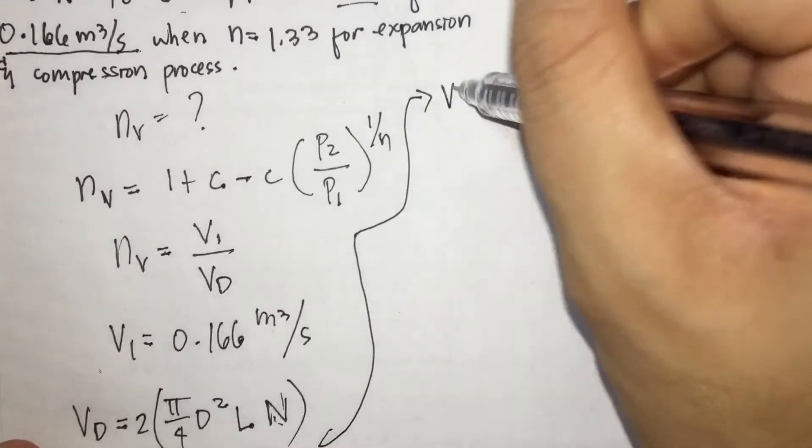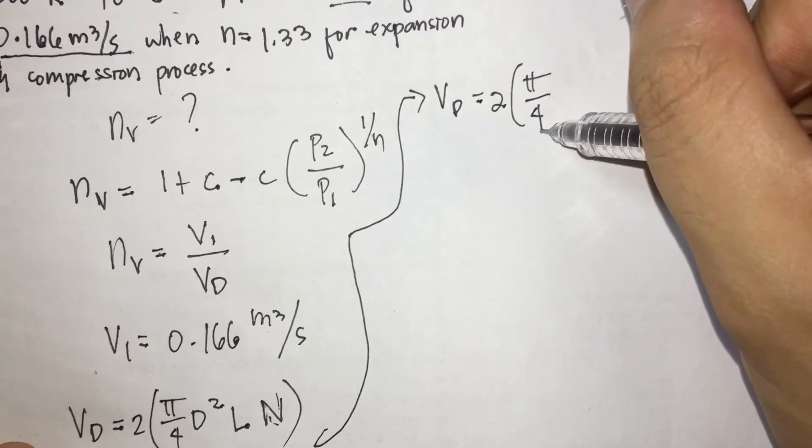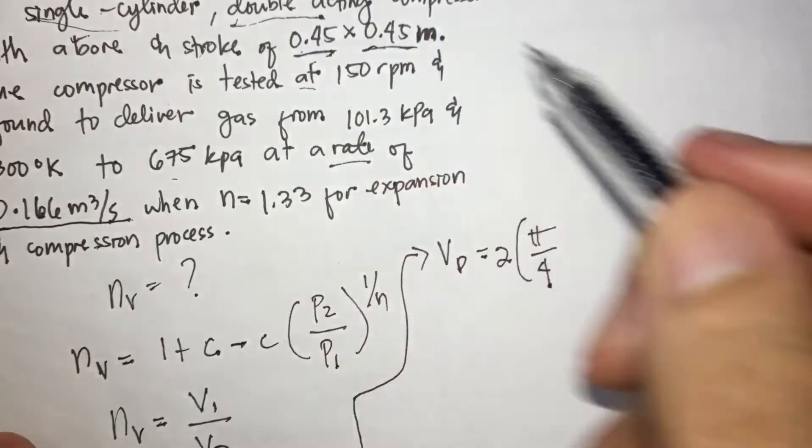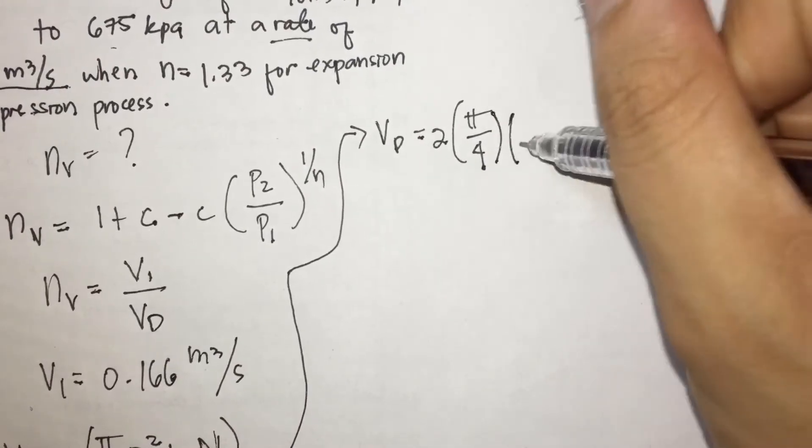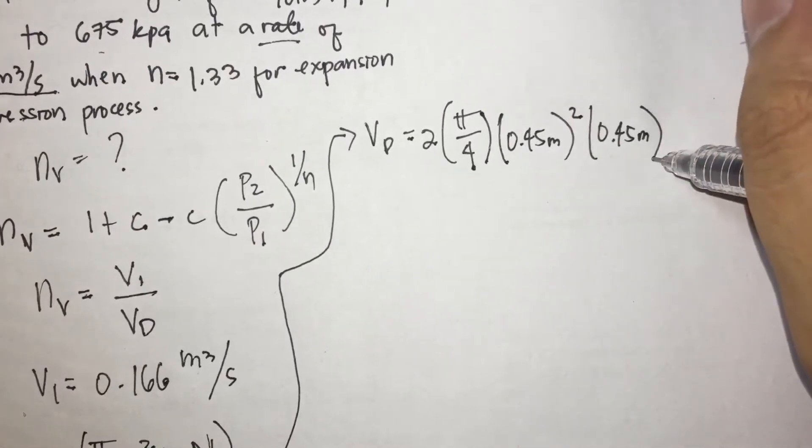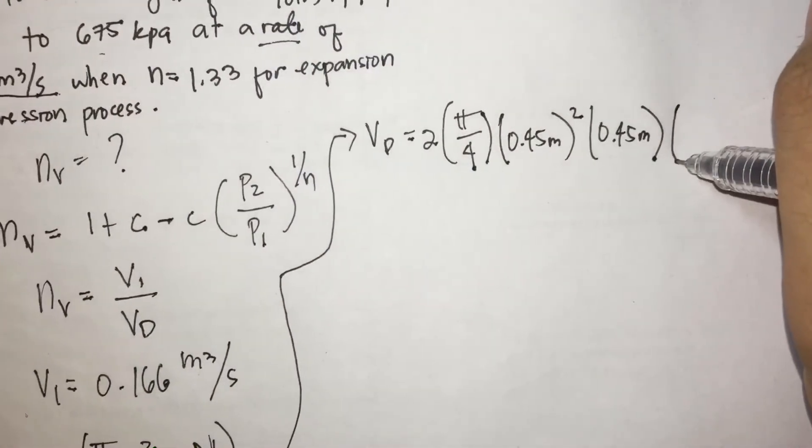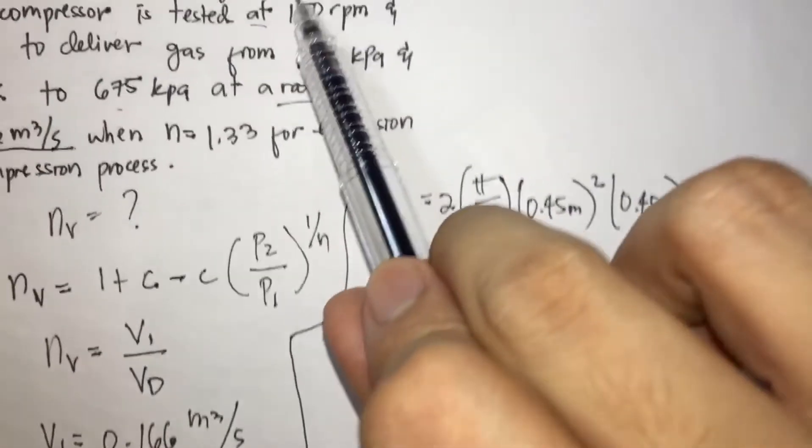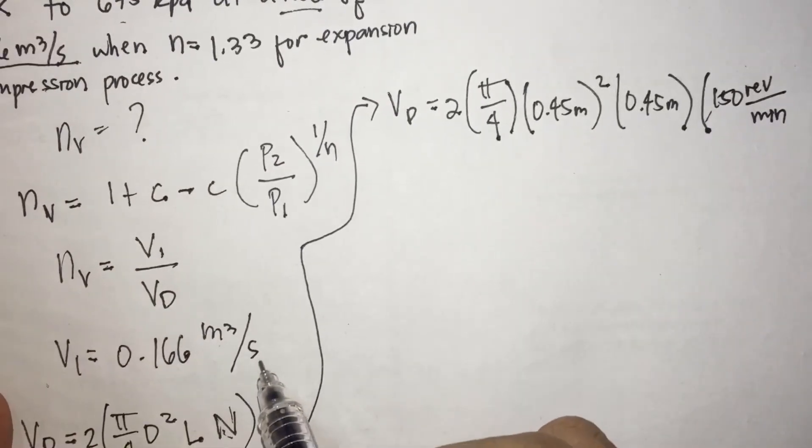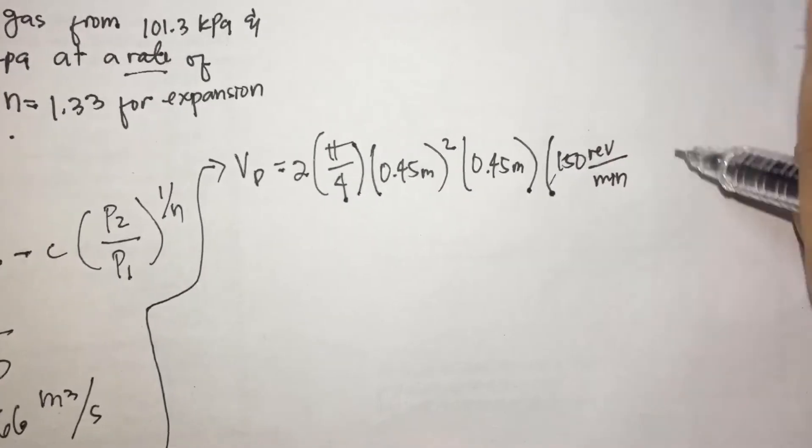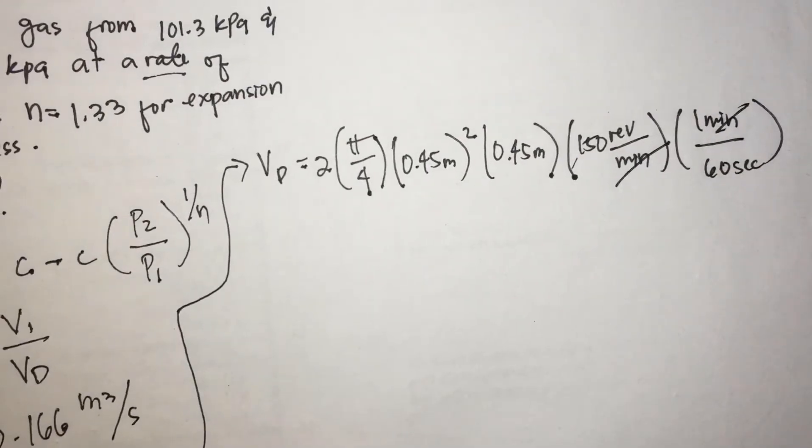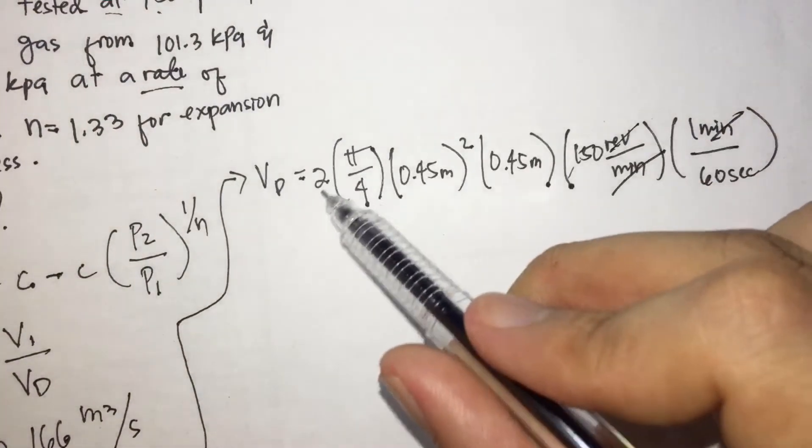So VD is equal to 2 times pi over 4, D diameter. Where's our diameter? Diameter and stroke are both 0.45 meter, so it's in meters. Times 0.45 meter squared times 0.45 meter, and N speed, tested at 150 rpm, 150 revolution per minute. Since our V1 is in seconds, we should make VD in seconds too, times 1 minute is 60 seconds.